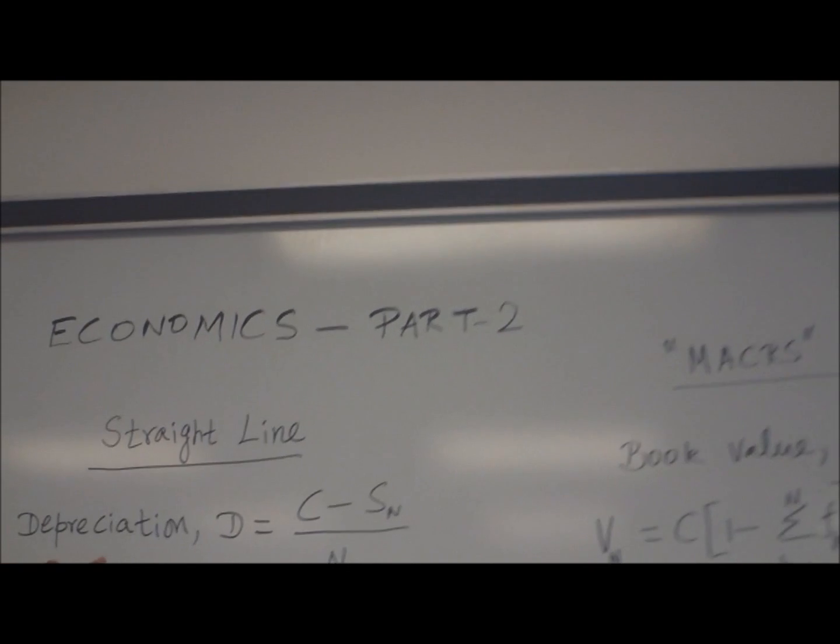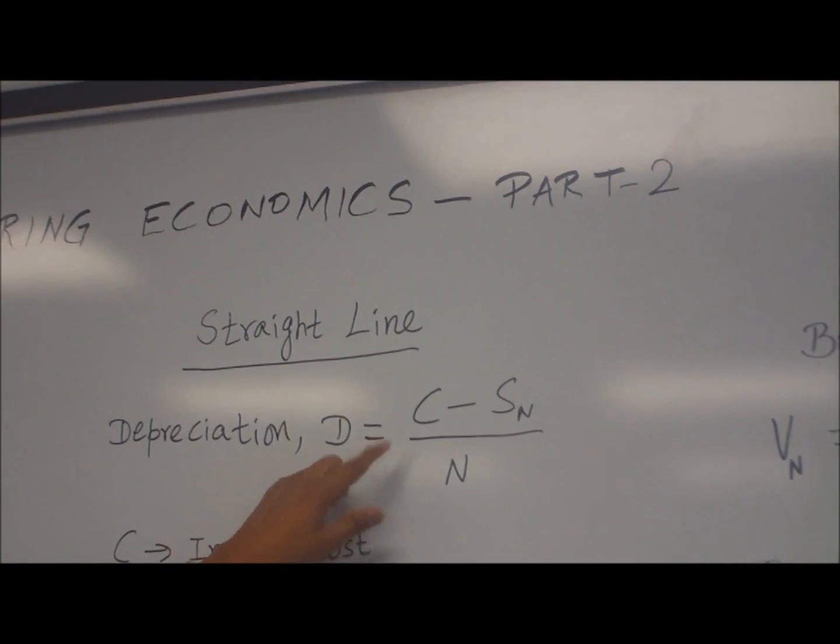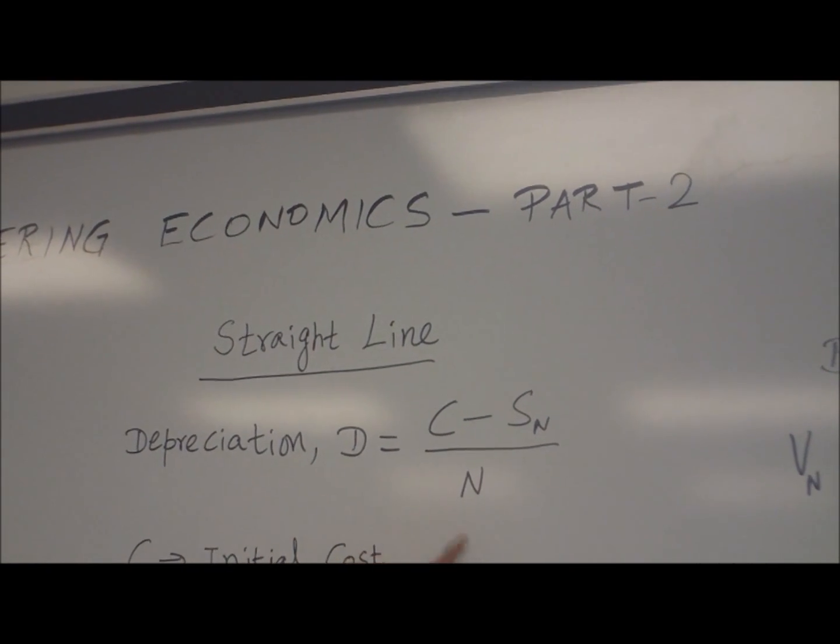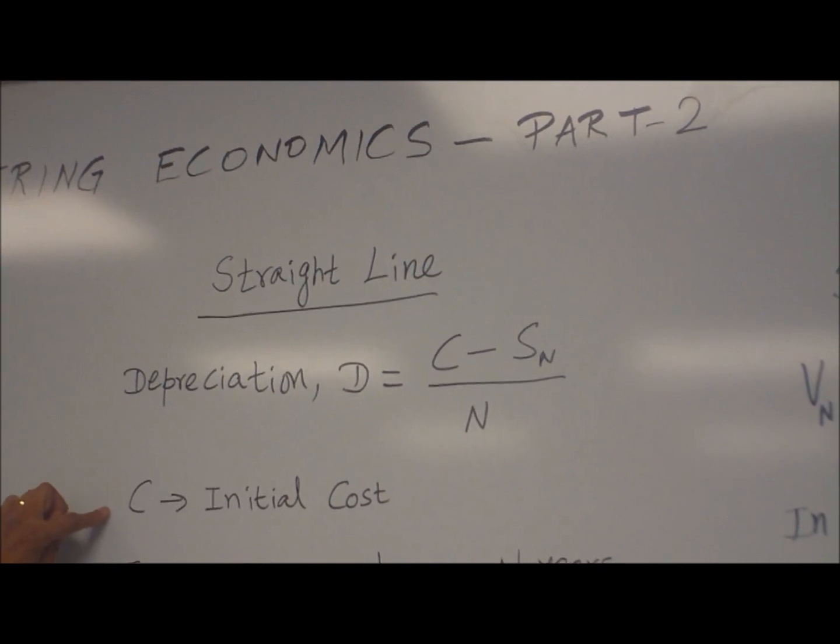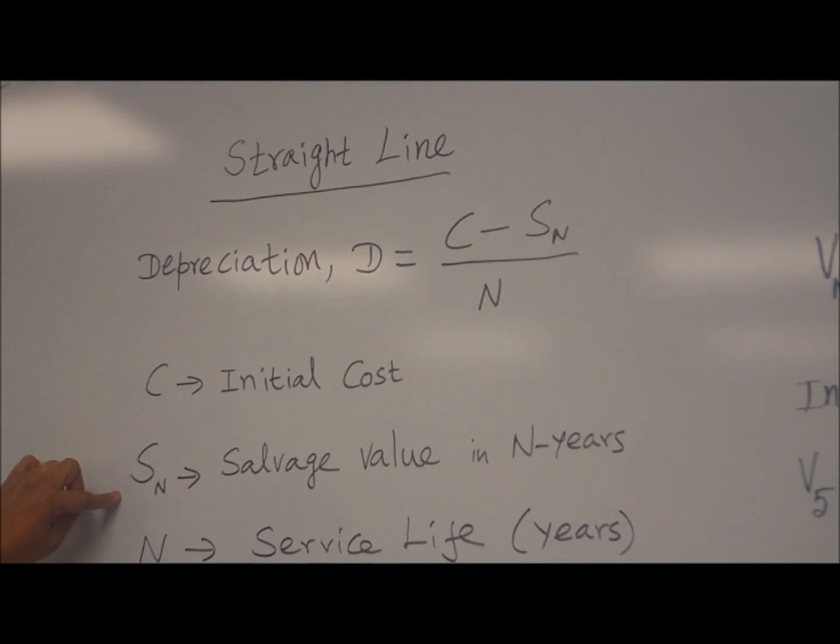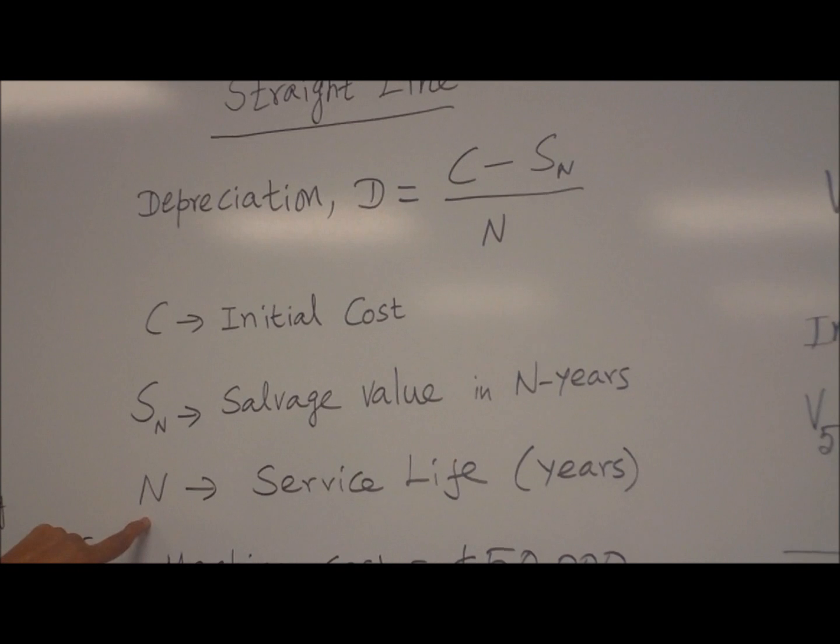We will see the Straight Line Method. Depreciation D is given by C minus S_N divided by N. C is initial cost, S_N is salvage value in N years, and N is service life.